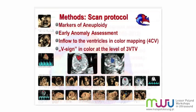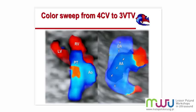The methodology of our scan was based on markers of aneuploidy, early anomaly assessment, and two basic cardiac views in color Doppler: the four-chamber view and the three-vessel and trachea view. We selected these views because they are the main determinants of the geometry of both normal and abnormal fetal heart, independently of whether it is first or second trimester.